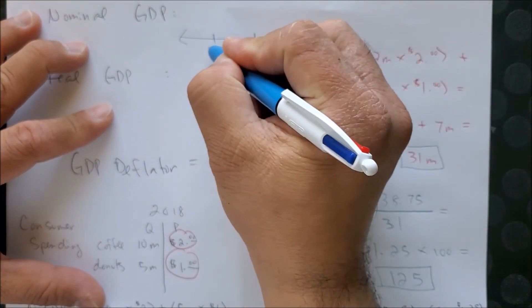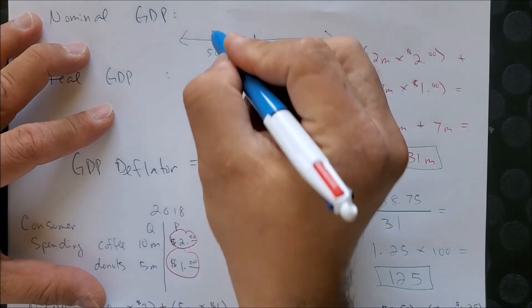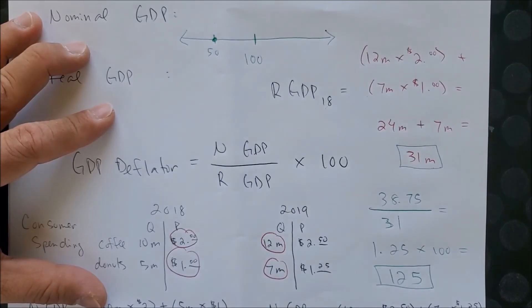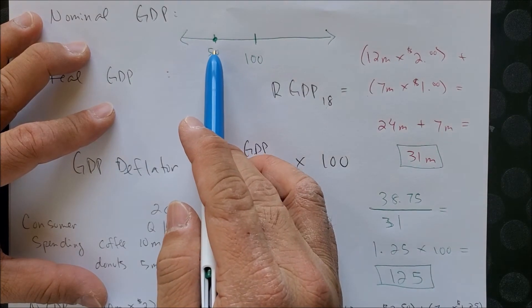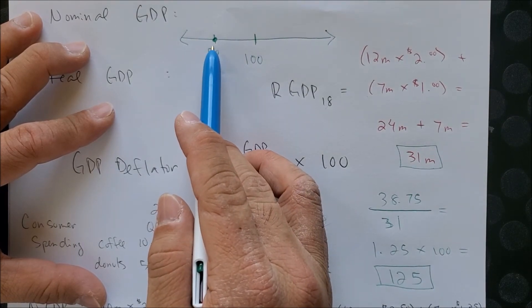Let's say if the answer is 50, this tells us that the price level growth this year is half of what it was last year with a deflator of 50.